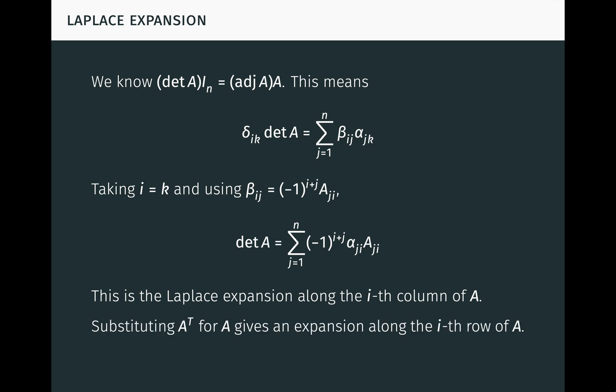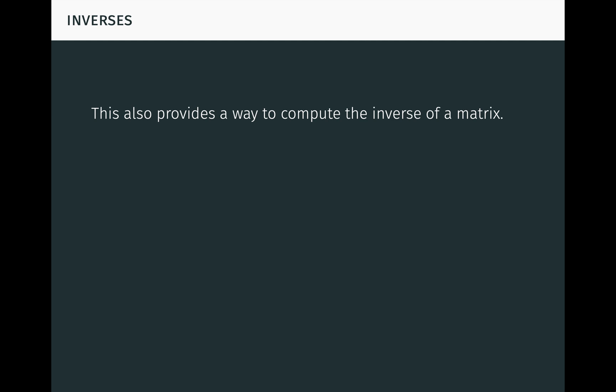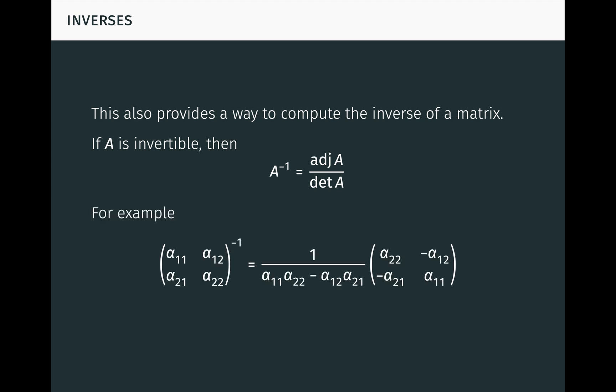Substituting A transpose for A gives a dual expansion along the i-th row of A. In addition to providing a way to compute the determinant, this also provides a way to compute the inverse of a matrix. If A is invertible, then A inverse is just the adjoint of A divided by the determinant of A. For example, the inverse of a 2-by-2 matrix is given by this formula, which you've probably seen before.